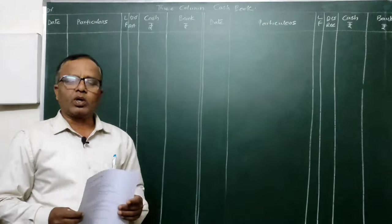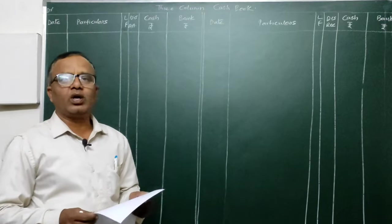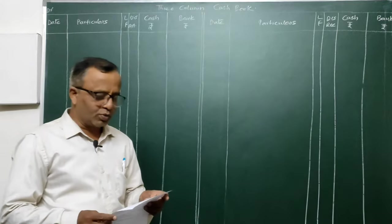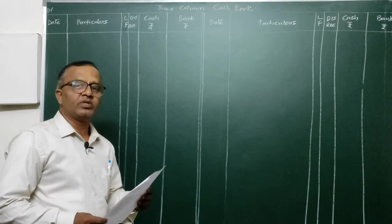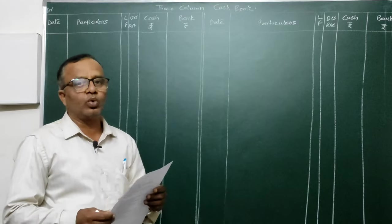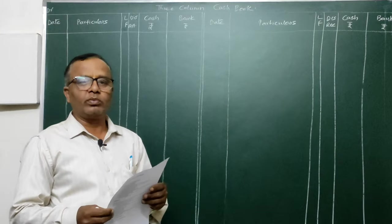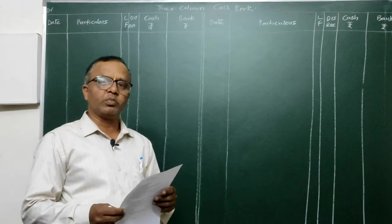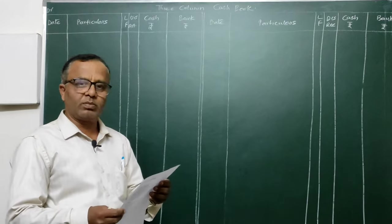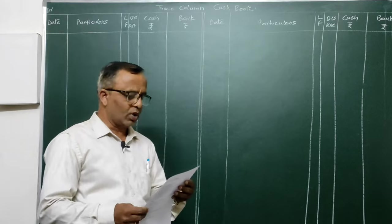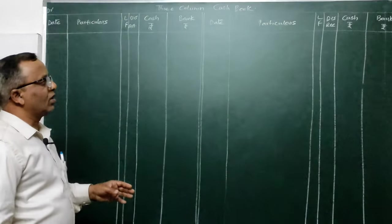Welcome to Rajivarao Accounts. Today let's see the three column cash book. I have given the problems in the description, you can go through the problem before going through the video. I want you people to go through the description so that you can understand the problem correctly.